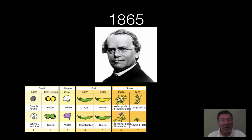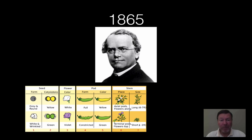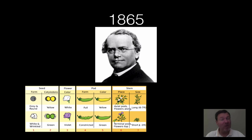In 1865, Gregor Mendel — an Austrian monk, not Australian — did a lot of experiments with pea plants and showed genetics. He was the father of genetics, and he was credited with that long after Darwin. What he did was give the mechanism by which Darwin's ideas could take place. We didn't know about genetics when Darwin came up with his theories, but it was Mendel who showed how it would work.